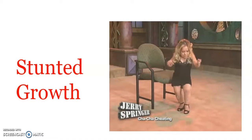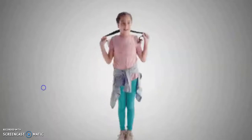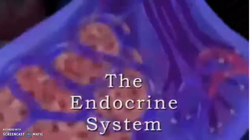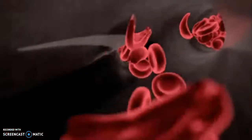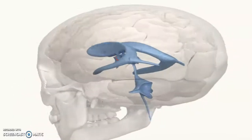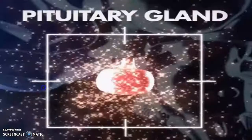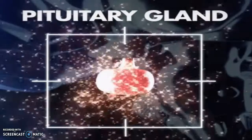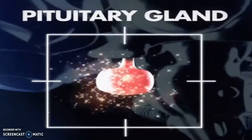Number one is stunted growth. Growth is controlled by the hormones which the body produces. The endocrine system in the body is made up of glands that produce hormones that can affect growth. Hormones are secreted through the bloodstream. The hypothalamus in your brain controls the pituitary gland, which in turn releases hormones that control growth.